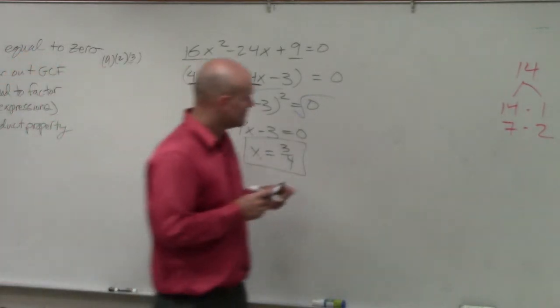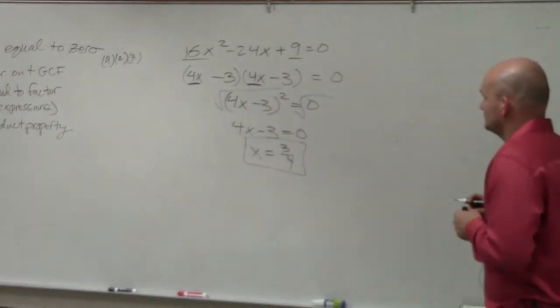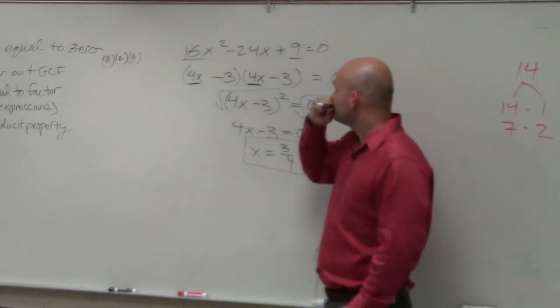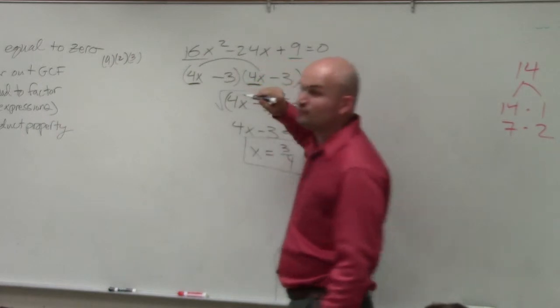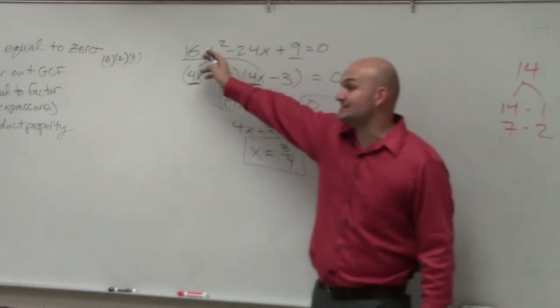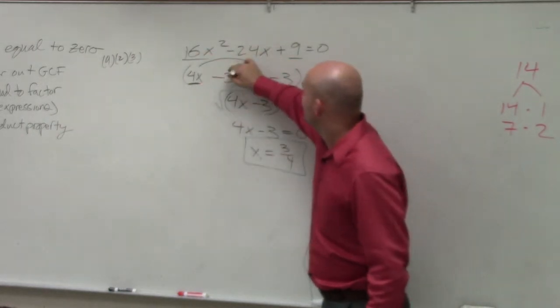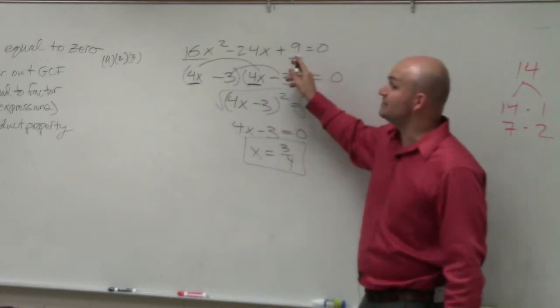Yes, question? Why would it be negative 3 at the other line there? Because, all right, so you agree with me that I'm doing FOIL again. 4x times 4x is 16x squared. Negative 3 times negative 3 does give you positive 9, right?